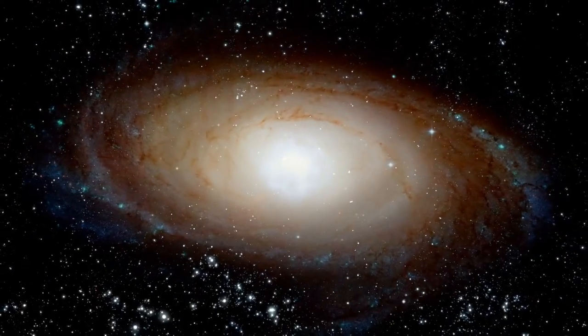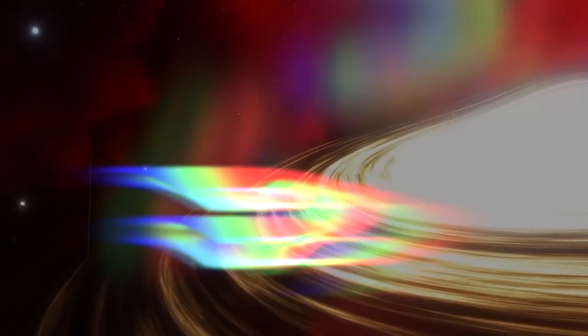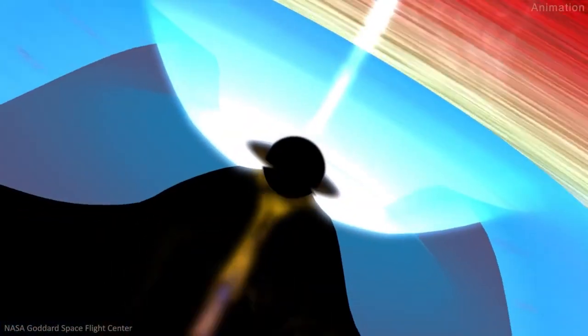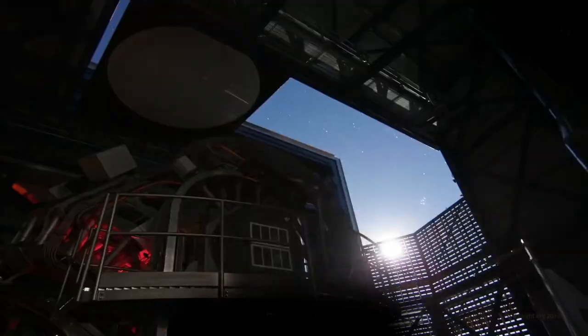When supermassive black holes found at the center of most galaxies start feeding on the clouds of dust and gas surrounding them, an accretion disk forms and space begins to heat up. As this burning hot disk of matter swirls around and into the black hole, it emits an immense amount of light in the form of x-rays out into space. These x-rays can then be detected by the powerful telescopes that can be found at various spots around the world.